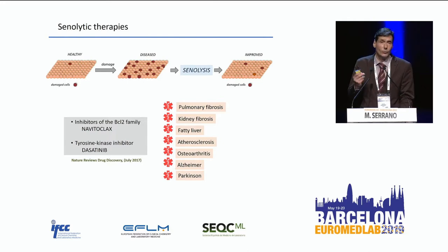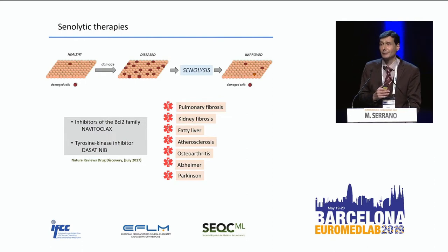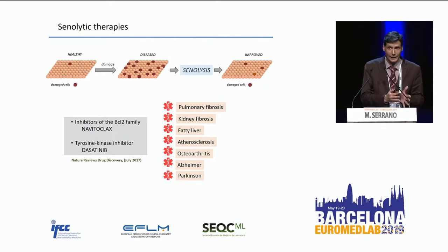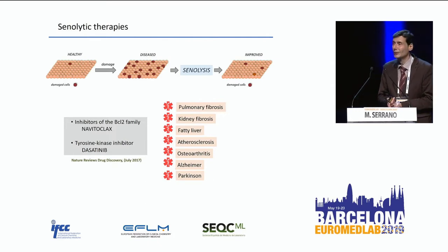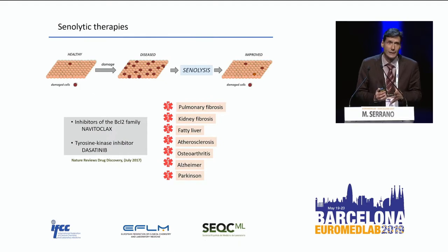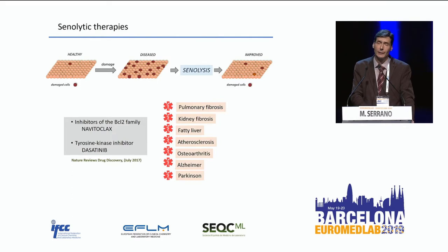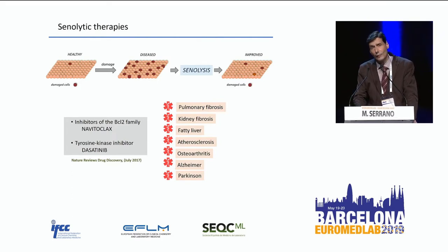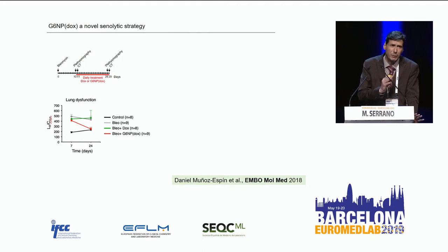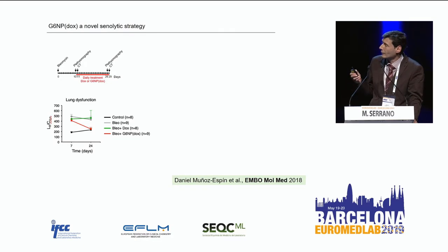One problem in this field is that there are no laboratory medicine techniques to detect senescence in real patients in a clinical environment. We can detect senescence in mice by sacrificing them and examining tissues, but there is no serum marker or imaging technique to detect senescence in real patients. This is a big bottleneck, making it difficult to follow the efficacy of clinical trials.